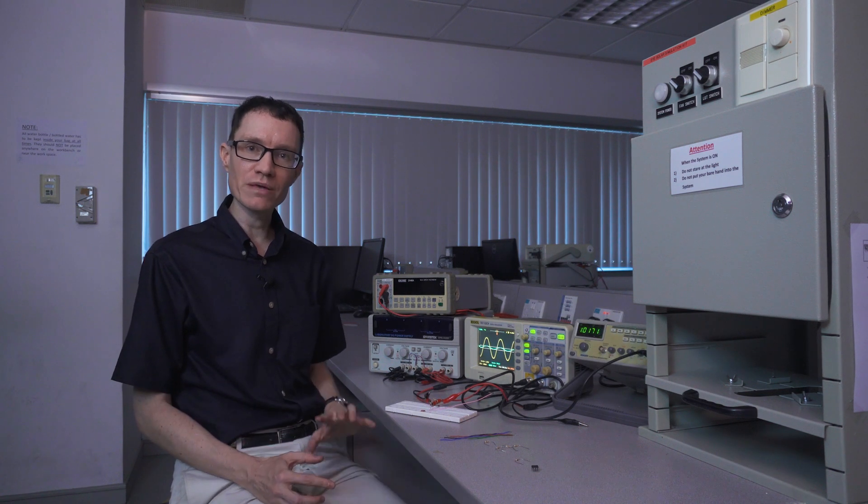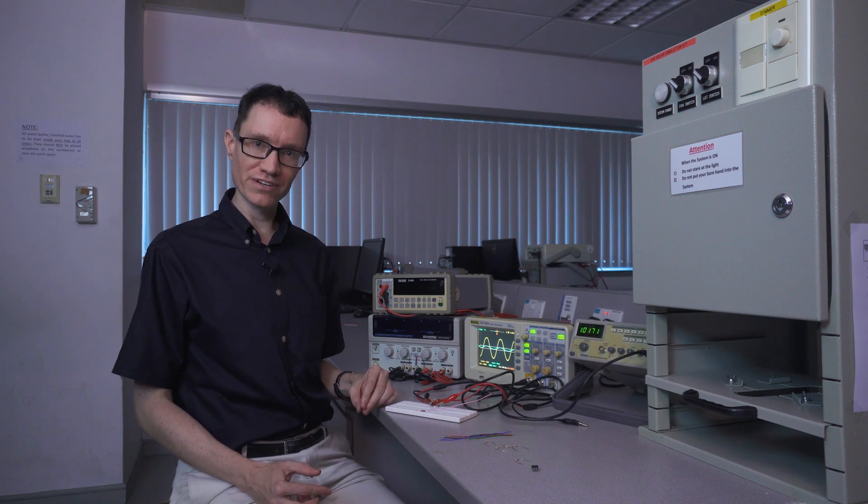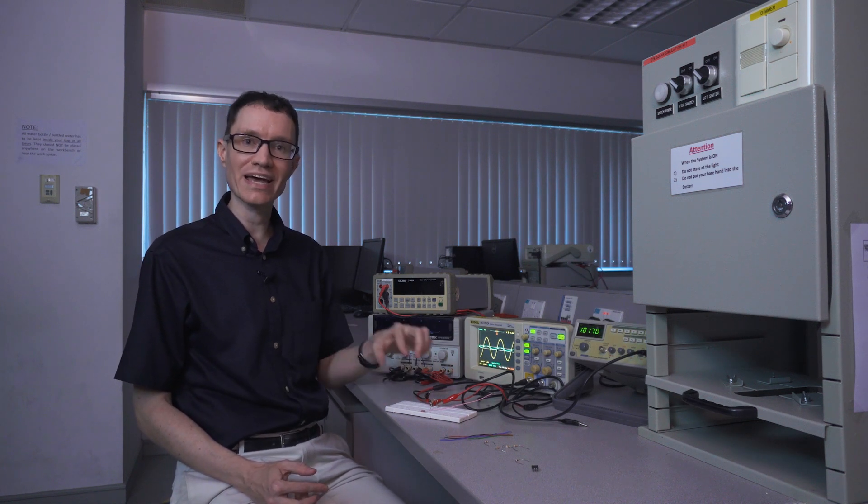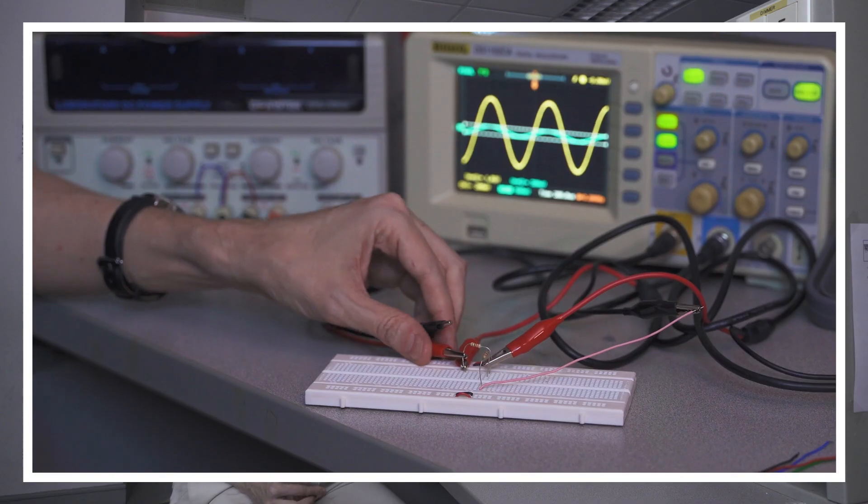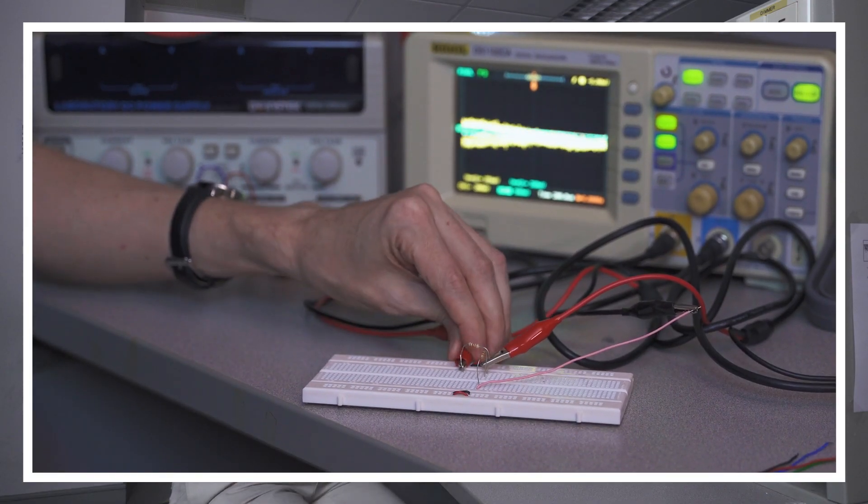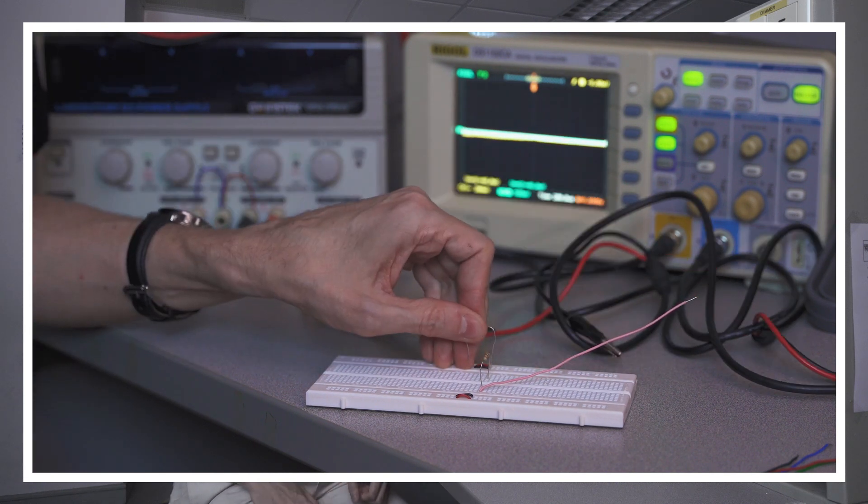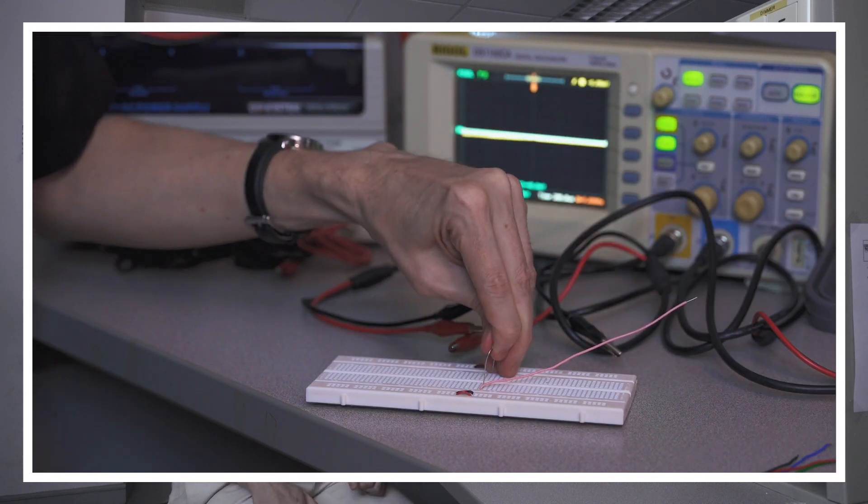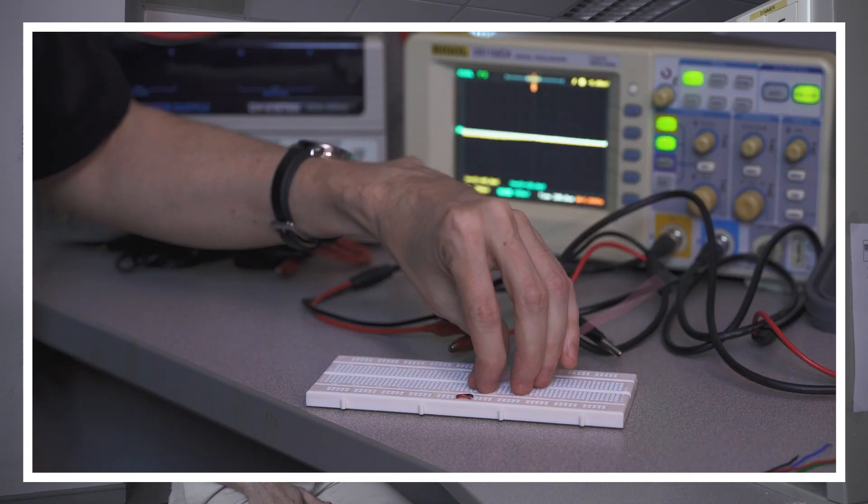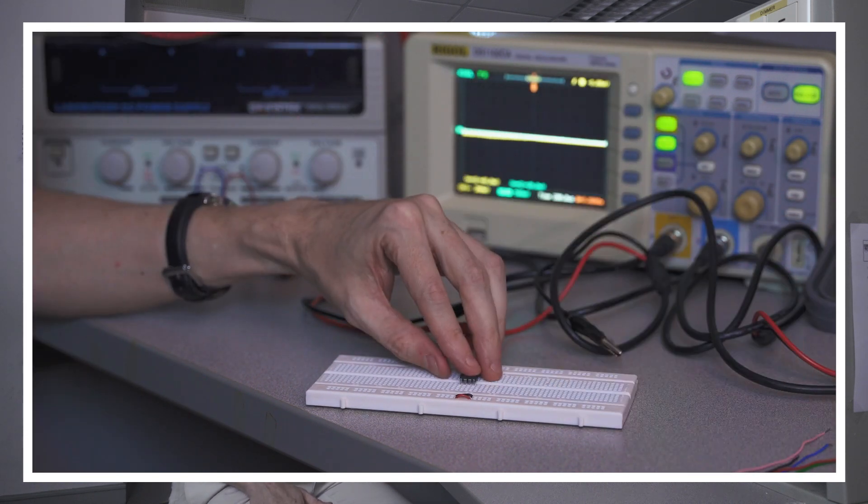I'm now going to rebuild the circuit but I'm going to insert the LM741 op amp between the source and the load resistors. What we hope to achieve is a constant peak to peak output amplitude even when we change the load resistance. Let's see if we can make it work. I'm going to start off with the non-inverting op amp configuration.